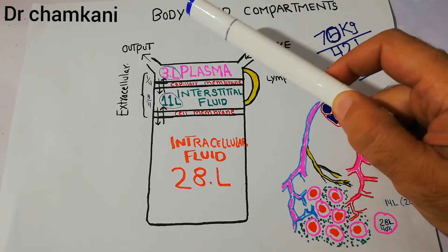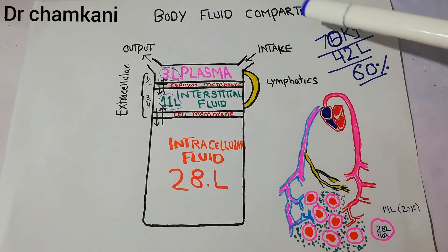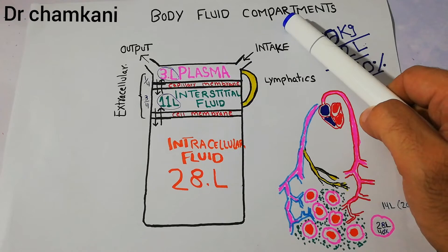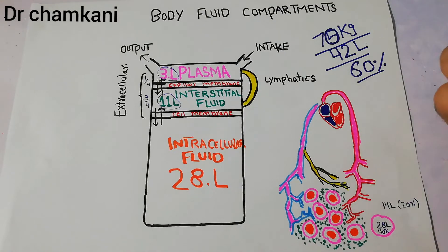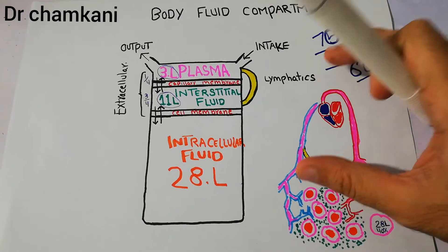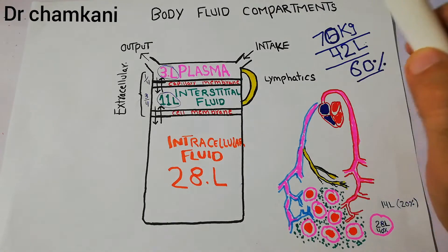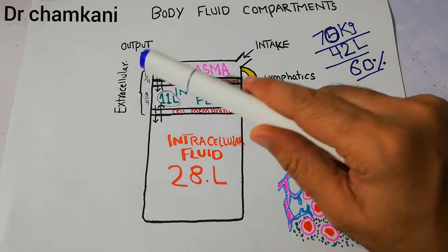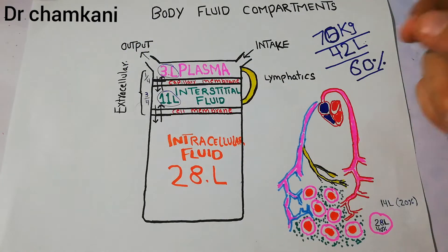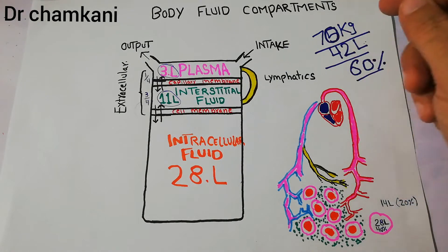Today we are going to talk about a very easy topic which is the body fluid compartments, or the different compartments in which the body fluid is maintained. In the human body there are two main compartments: the intracellular compartment and the extracellular compartment, in which the fluid is present, and we are going to discuss them.